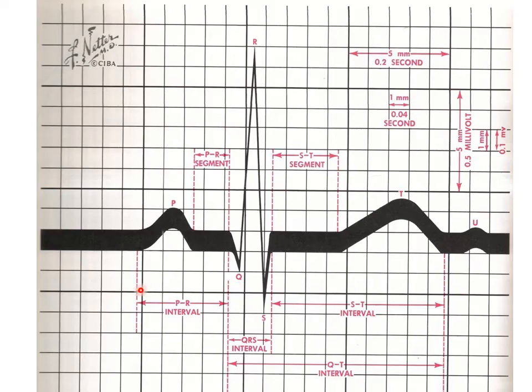This shows the normal PR interval being between 3 and 5 small squares and the normal QRS complex being under 3 small squares.